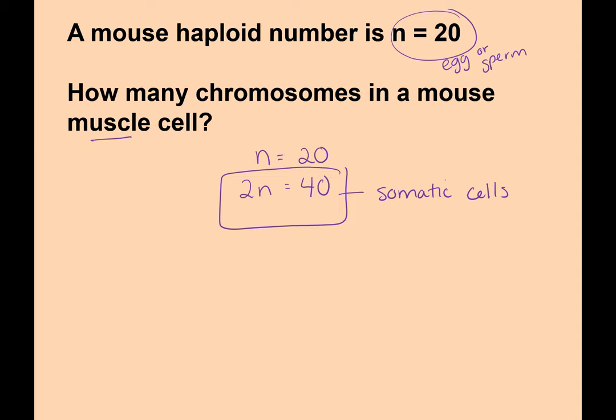99.9% of all the animals we talk about are diploid. Plants, you'll learn in genetics, can have really various ploidy. Some plants — strawberries, for example — are octoploid, which means they have 8 of every chromosome.